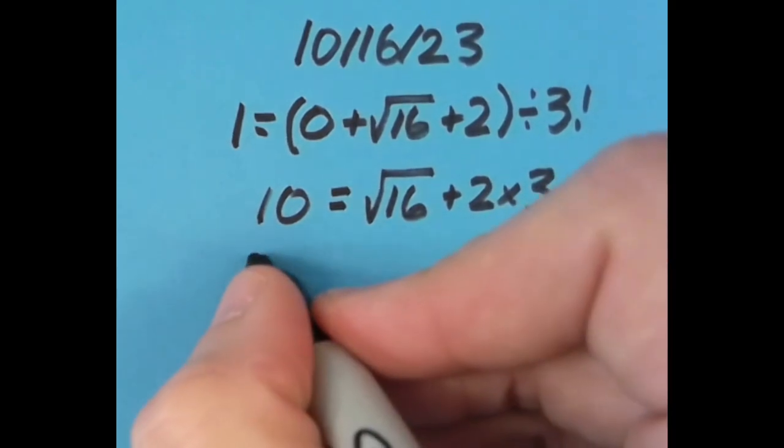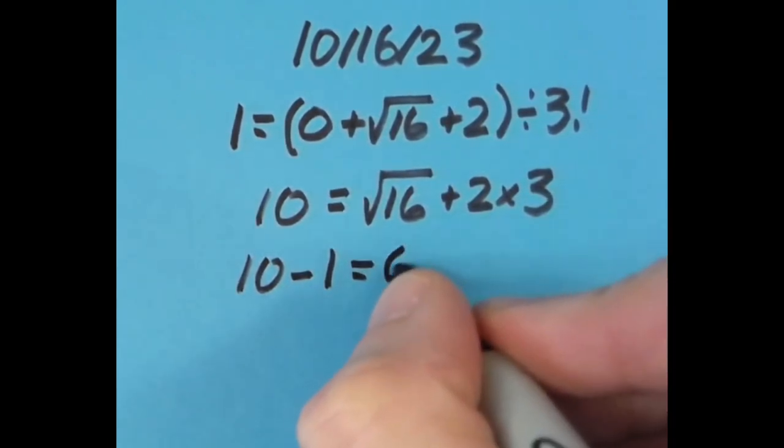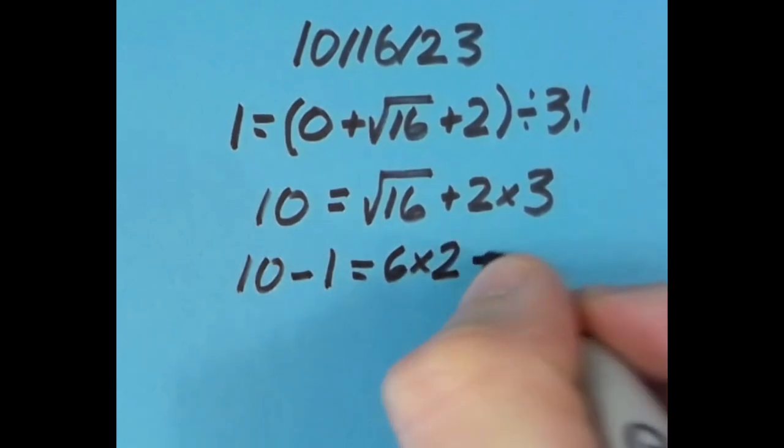With the equal sign over another spot to the right, I said let's do 10 minus 1 to get 9, and over here I'm going to do 6 times 2 to get 12, and 12 minus 3 is also 9.